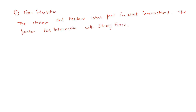In the second part of the question, quarks have spin one-half. There are two types: up quarks having spin plus one-half and down quarks having spin minus one-half. Baryons have spin one-half or three-halves, while mesons have spin zero or one-half.